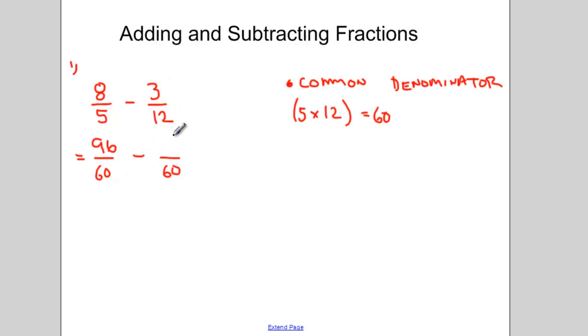Likewise, with my fraction 3 twelfths, to convert this denominator from 12 to 60, I multiply by 5. So I do the same thing with the number 3. I multiply 3 by 5, and I get 15.